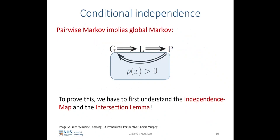The last thing we need to prove is that the pairwise Markov property implies the global Markov property, but this is slightly more complicated to prove and only a brief sketch of proof will be shown. The rigorous proof is not needed for this class. To understand the sketch of proof, we first need to understand the independence map (IMAP) and what is called the intersection lemma.